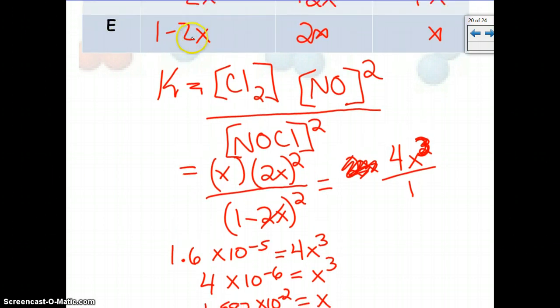Then we need to go back, and we need to plug them in to get our equilibrium concentrations. So we have 1 minus 2 times 1.58 times 10 to the negative 2nd, which is very small, but we end up with 0.9683. Then we have 2 times 1.587 times 10 to the negative 2nd, and we get 0.03174, and then this one is just x itself, which is 0.01587. So there are our equilibrium concentrations.